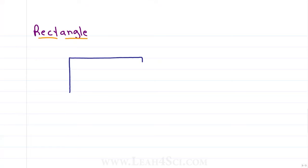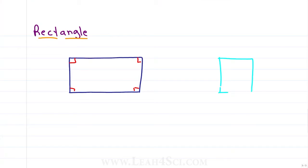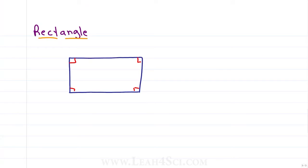When you look at a rectangle, recognize that it comes from the word for right angle. A rectangle has four right angles. And if you're thinking about a square, that's just a very specific type of rectangle where the top and the bottom are the same length as the two sides. But let's hold off on that.